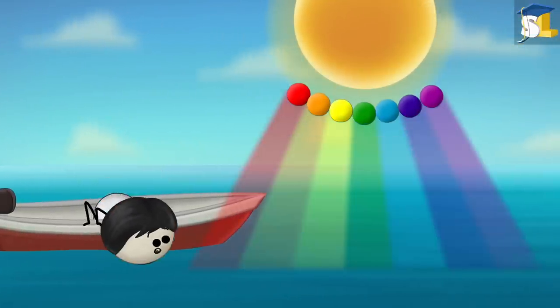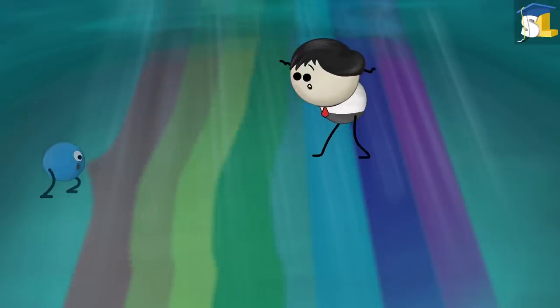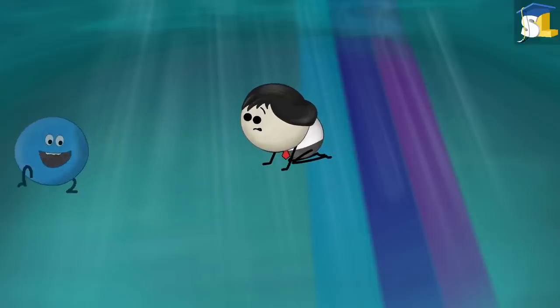Now, when sunlight falls on the ocean, it passes deep into the water. Here, red, orange, yellow, and green colors of sunlight are absorbed more strongly by water molecules.